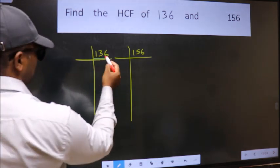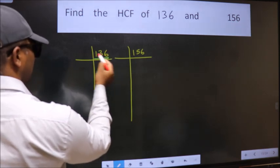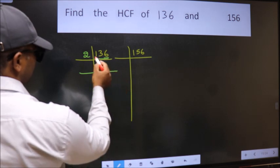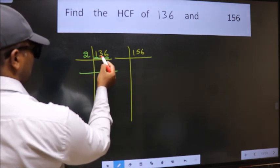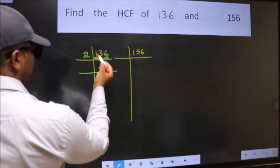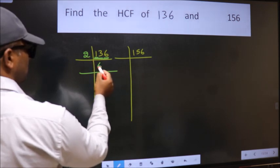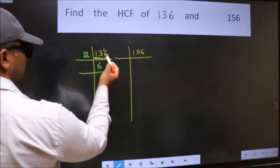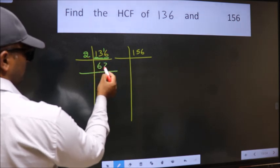In this number, last digit 6 is even, so take 2. First number 1 is smaller than 2, so take the two numbers 13. A number close to 13 in the 2 table is 12. 13 minus 12 is 1, carried forward makes 16. When do we get 16 in the 2 table? 2 times 8 is 16.